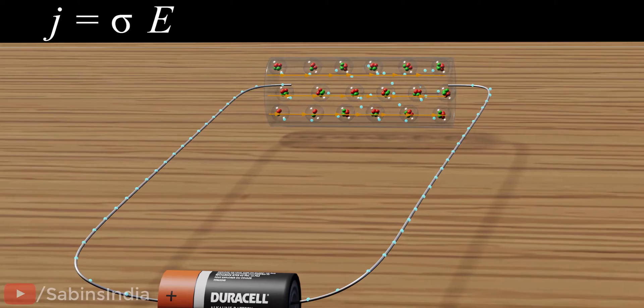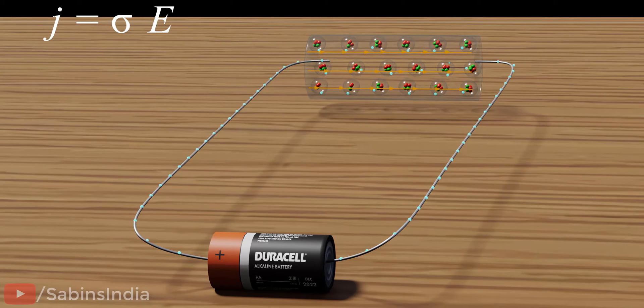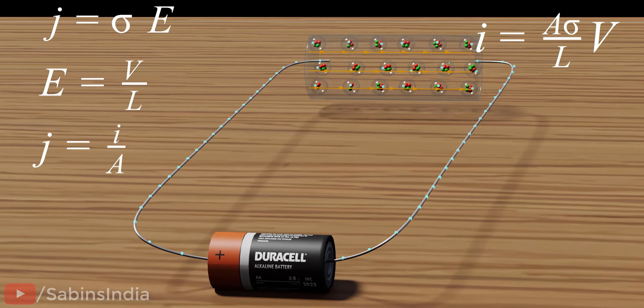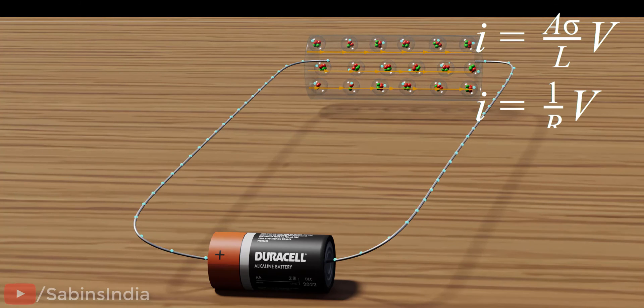Assume this electric field is generated by a battery. According to the definition of electric potential, we can deduce the electric field value as shown. If the conductor has a cross-sectional area of A, we can convert this to a relationship between voltage and current. This representation of Ohm's law is the most used one in physics and engineering.